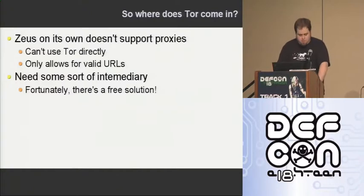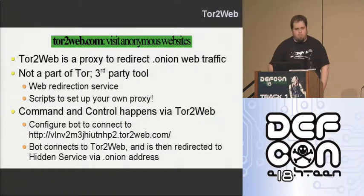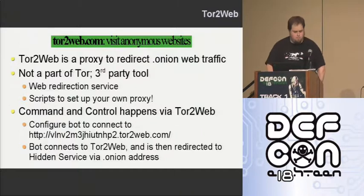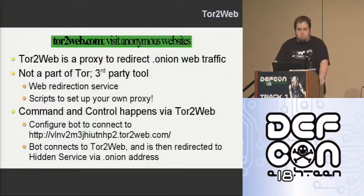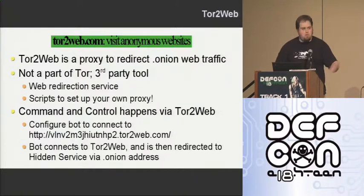There is one intermediary solution that is free and works pretty well — it's called Tor to Web at tortoaweb.com. It's not affiliated with the Tor project at all; it's a third-party tool. It's a web page that will redirect requests made to tortoaweb.com with the right dot onion hash, send it through Tor themselves, and return you the results, just like any other proxy.